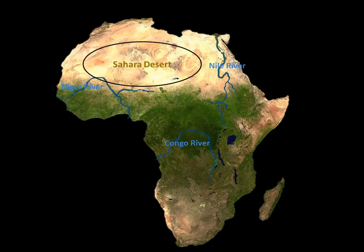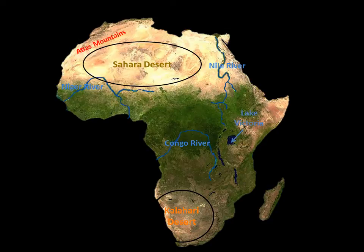And now we have the Sahara Desert. The Sahara Desert is the largest hot desert in the world. On the southern tip of Africa, we have the Kalahari Desert. Now we have Lake Victoria. Lake Victoria is the largest freshwater lake in Africa. Next is Lake Tanganyika. Lake Tanganyika is the longest lake in the world.